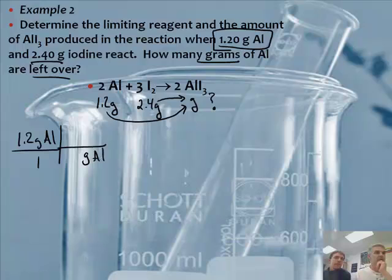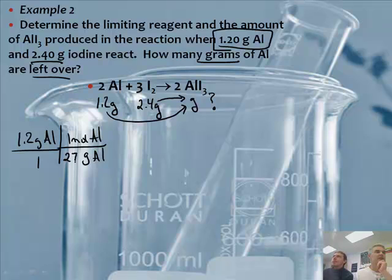1.2 grams of Al over 1. So again, I'm going to convert grams of Al to grams of AlI3, and then grams of I2 to grams of AlI3. Lowest wins. All right. So this will be grams of Al to 1 mole of Al. Looking at the periodic table, let's say 27. Is it 27.0? It is 26.9 something. 27.0 is close, 27 works for me.